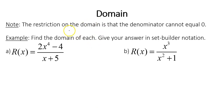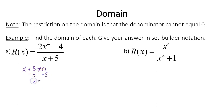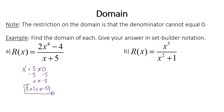With regard to the domain, the restriction is that the denominator cannot equal zero, so let's find the domain of each function. We'll give the answer in set-builder notation. For r of x equals 2x to the fourth minus 4 over x plus 5, we know that x plus 5 is not allowed to equal zero. Solving for x, we get that x cannot be negative 5, because negative 5 plus 5 is zero. So the domain in set-builder notation is: x such that x cannot equal negative 5.